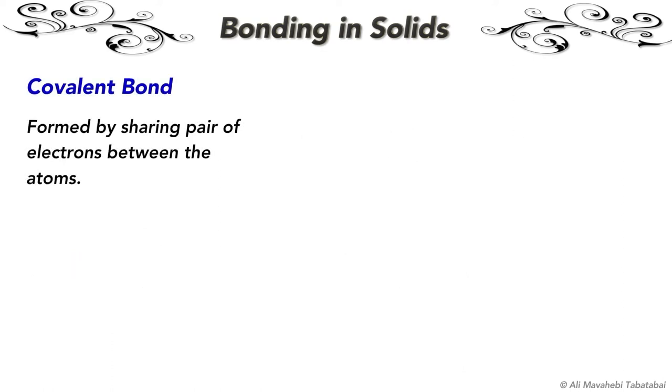Covalent bonds are formed by the sharing of electrons between atoms. So atoms share electrons in such a way that the resulting structure gets the stable electron arrangement. And we already know that the stable arrangement means that the outer shell is filled with electrons, which is the configuration of noble gases.